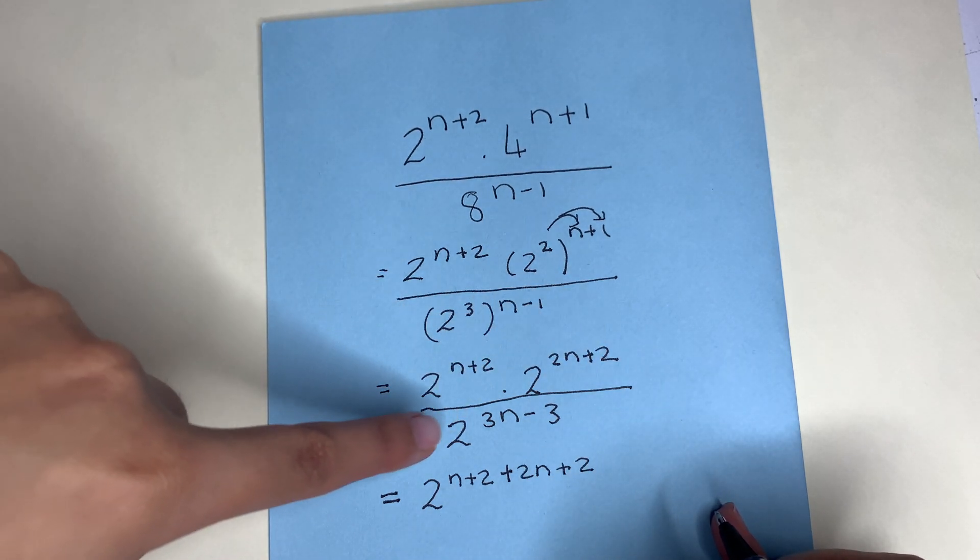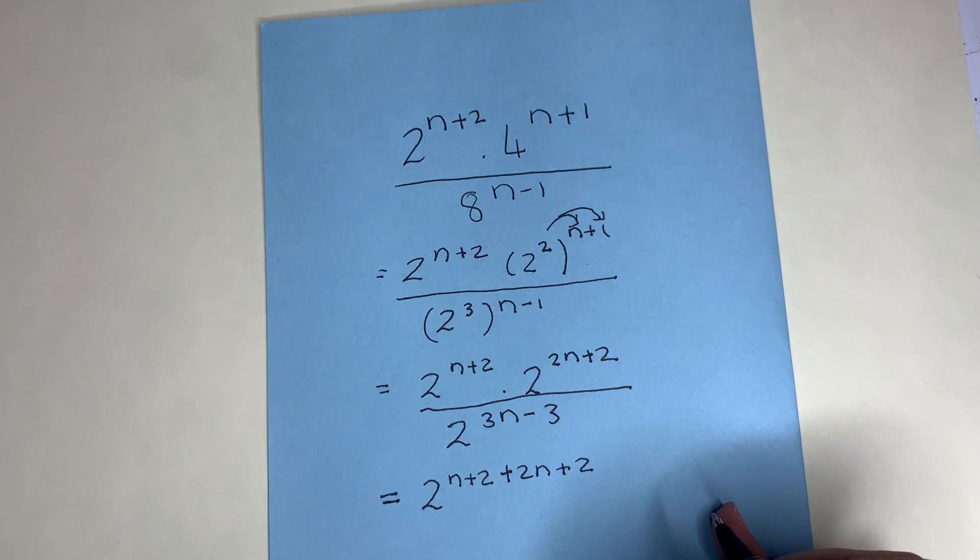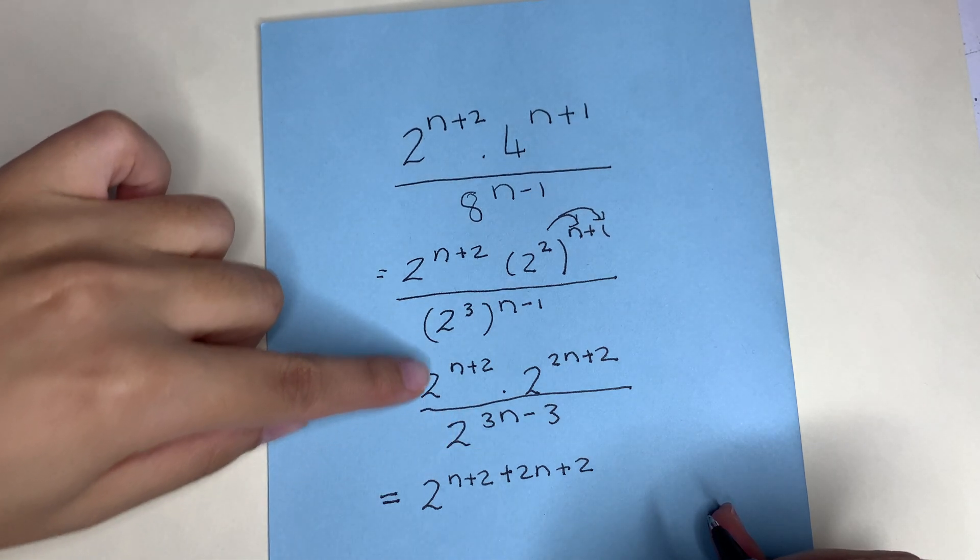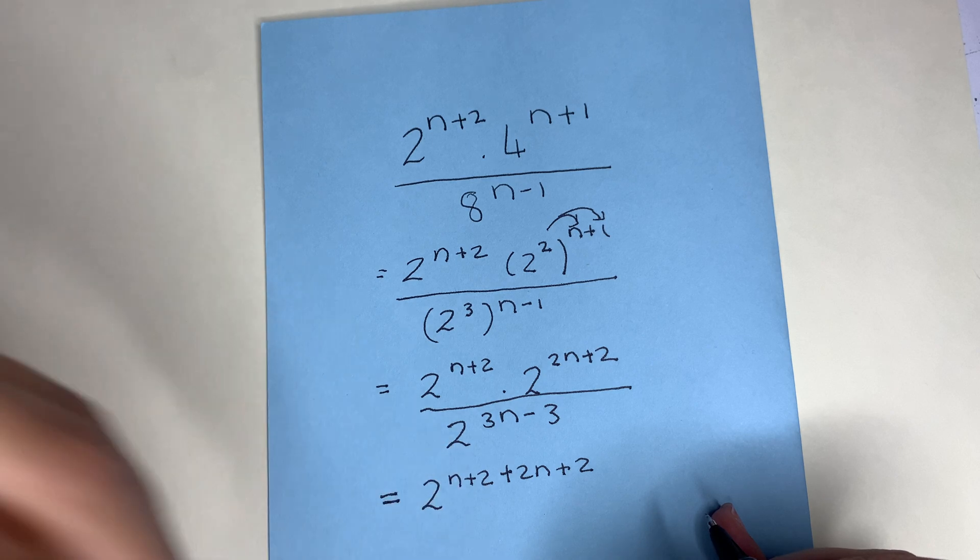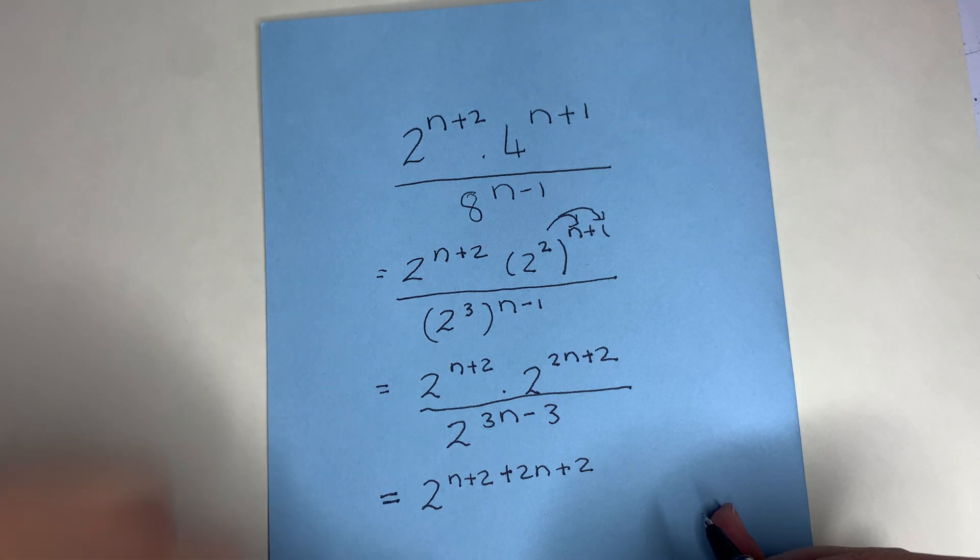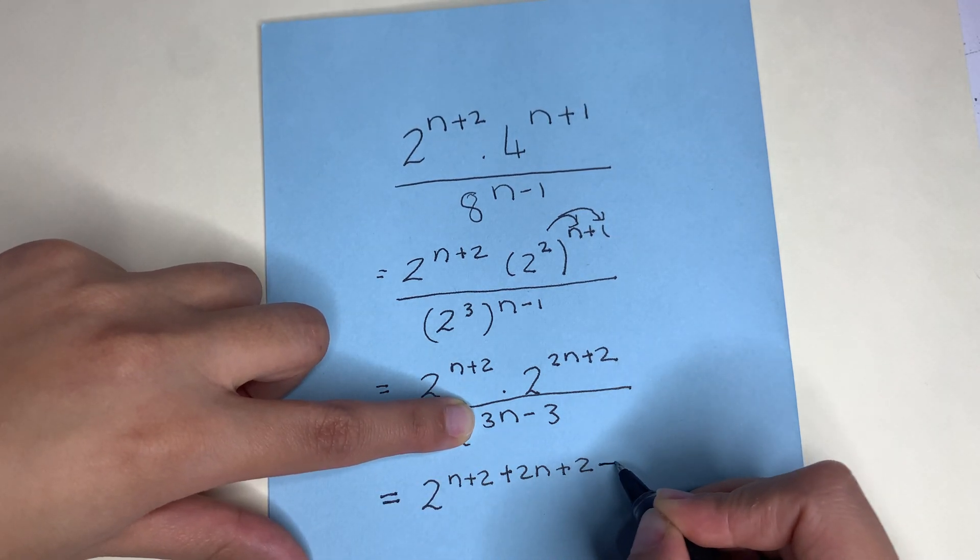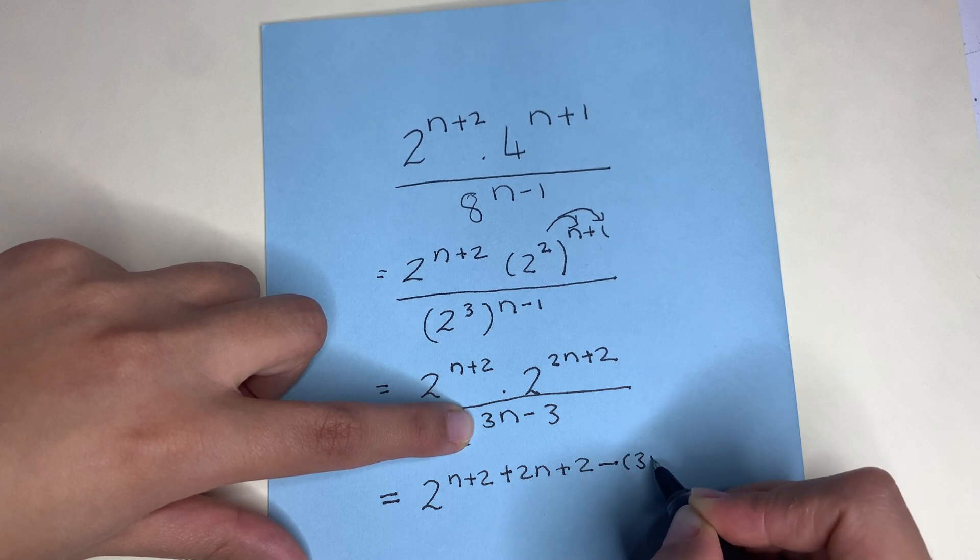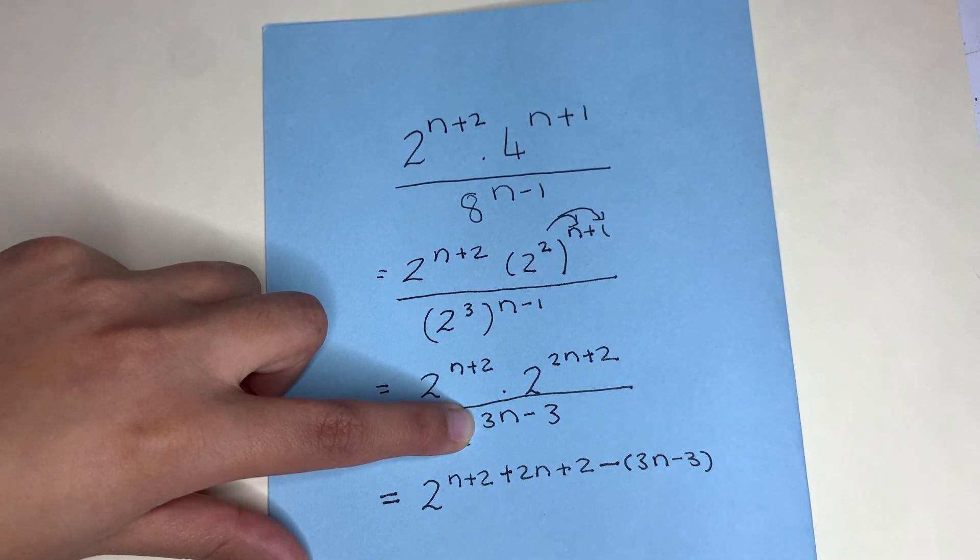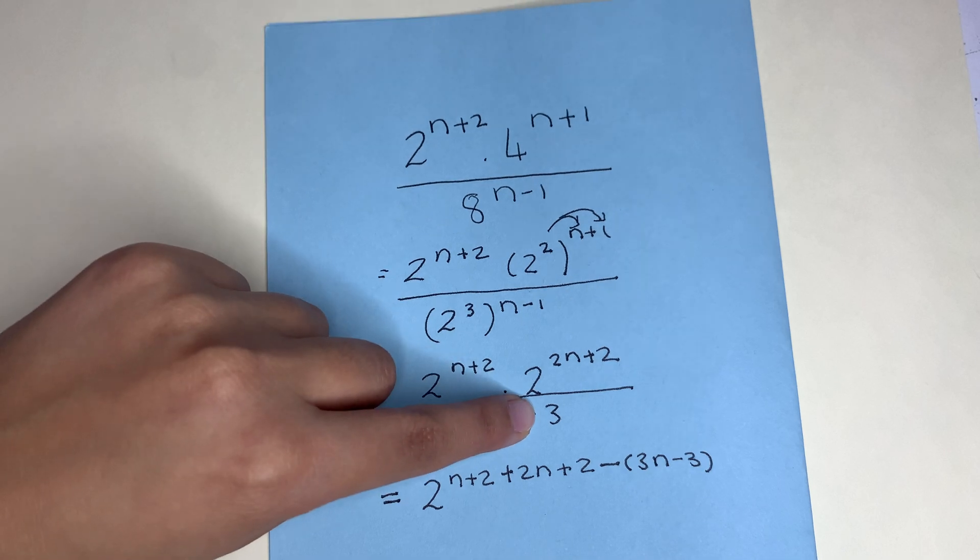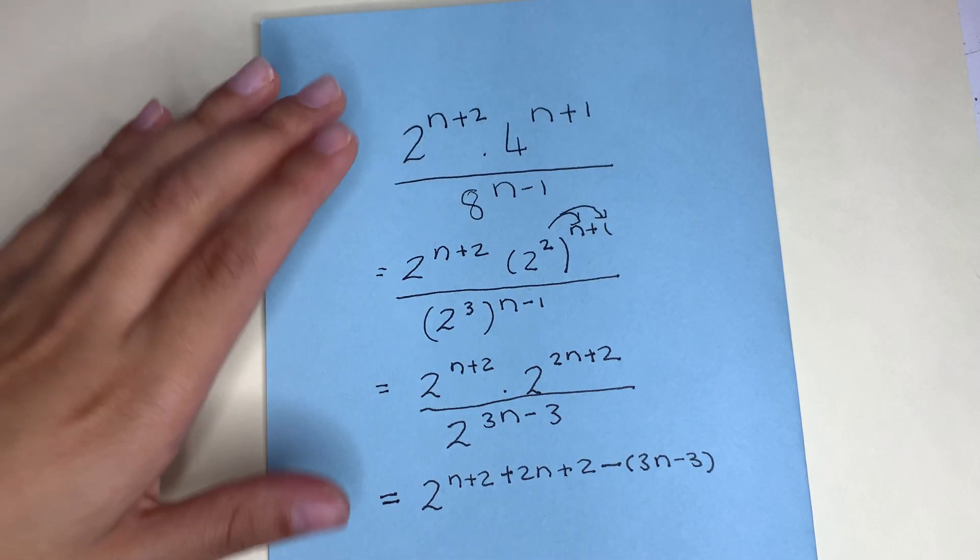Now when I am taking the ones from the denominator by law 2 of exponents, division of the same basis implies subtraction of the exponents. So now I'm going to subtract the value of the exponent at the bottom. So this 3n minus 3, we are going to put a minus in front of that.